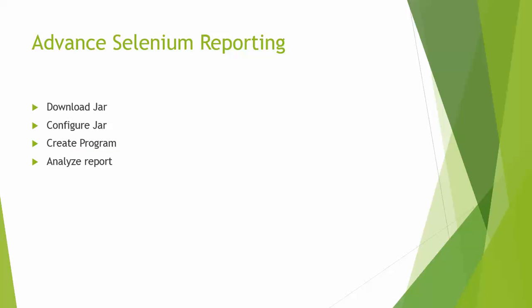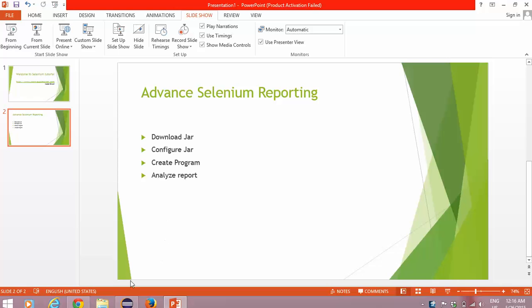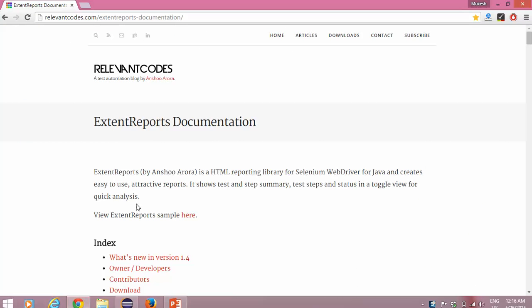We'll download one extent report jar file that will help us create a custom report. We'll download that jar file, configure it, then we'll create a sample program, create a report, and I will show you the different features. We'll analyze the report. So before moving to the actual reporting, let me show you the jar file we are going to use.